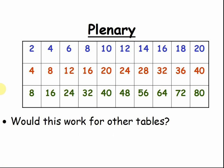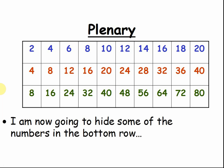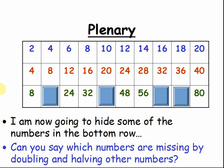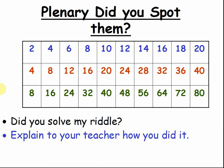Would this work for other tables? Like, for instance, the 3 times table and the 6 times table? And the 12 times table? What do you think? Which ones? How is doubling and halving useful in multiplication and division? Pause the video and tell your teacher. I'm now going to hide some of the numbers in the bottom row — can you say which numbers are missing by doubling and halving the other numbers? Pause the video and tell me which numbers are covered up. Did you solve my riddle? Explain to your teacher how you did it.